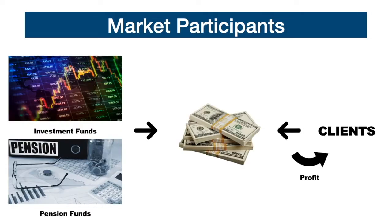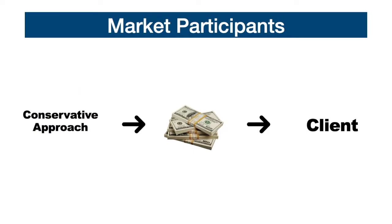Investment funds and pension funds are organizations that manage huge amounts of capital provided by private clients and the government. These funds speculate large amounts of money in the market, creating profit for themselves and for their clients. Investment firms and pension funds invest trillions of dollars using a conservative approach, as their purpose is to protect the accumulated capital and guarantee the payment of pensions. These two participants do not influence daily fluctuations, but when they decide to enter or exit a position, they can generate large trend reversals, adding or removing liquidity from the market.